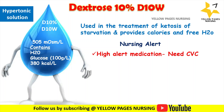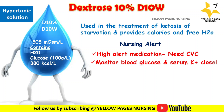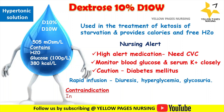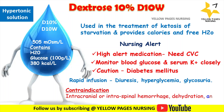When D10W is administered, monitor blood glucose closely. It is used with caution in patients with diabetes mellitus, and monitor for hypokalemia, as rapid infusion may cause diuresis, hyperglycemia, and glycosuria. D10W is contraindicated in patients with intracranial or intraspinal hemorrhage, delirium tremens, severe dehydration, anuria, and hepatic coma.